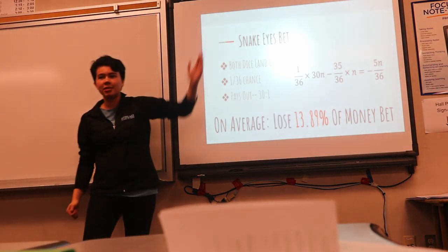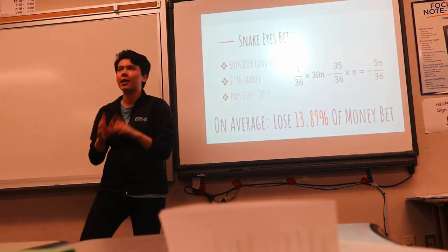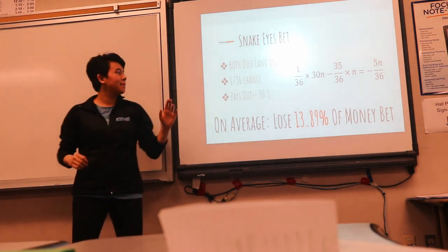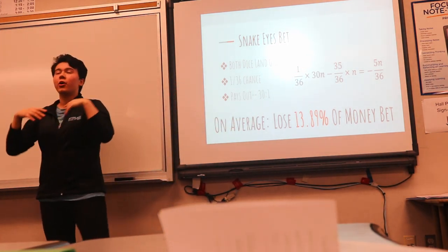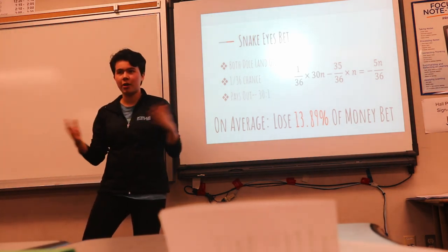So for the snake eyes bet, this is the bet when you roll the dice, you get 30 to 1 payout if the dice both land on one. Since there are six faces on each die, there are six times six possibilities for the outcomes, 36.